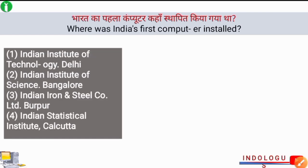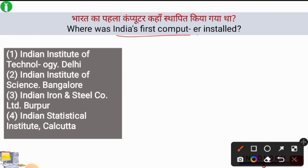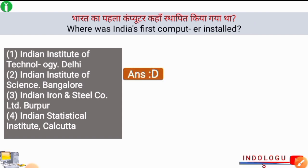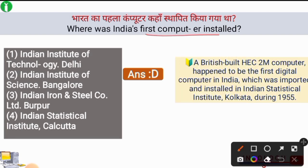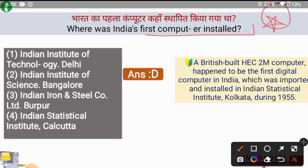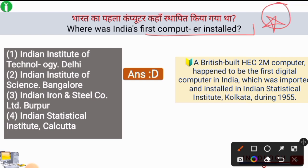Next question: Where was India's first computer installed? The right answer is option D, the Indian Statistical Institute, which is located in Calcutta. A British-built HEC 2M computer happened to be the first digital computer in India, which was imported and installed at the Statistical Institute of Kolkata during 1955.